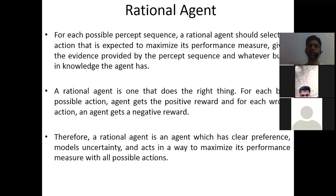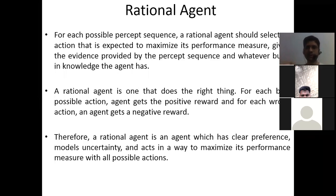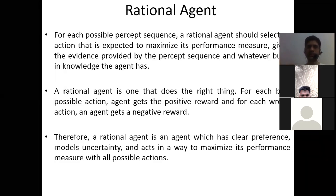Therefore, a rational agent is an agent which has a clear preference, models uncertainty, and acts in a way to maximize its performance measures with all possible actions. A rational agent is like a tool that acts rationally, built upon its previous database — its previous percept sequence and built-in knowledge — and on that basis looks for optimized performance to decide what to do or not to do.